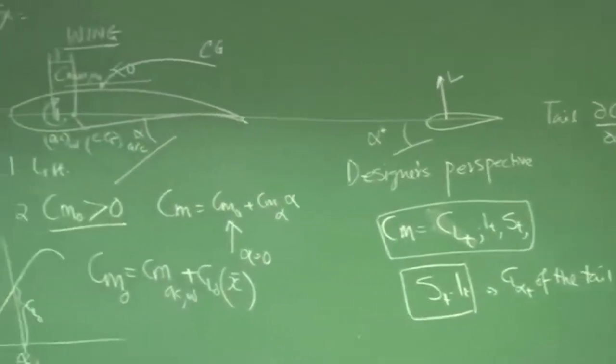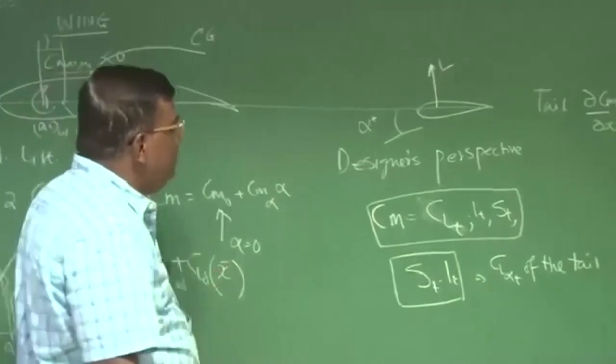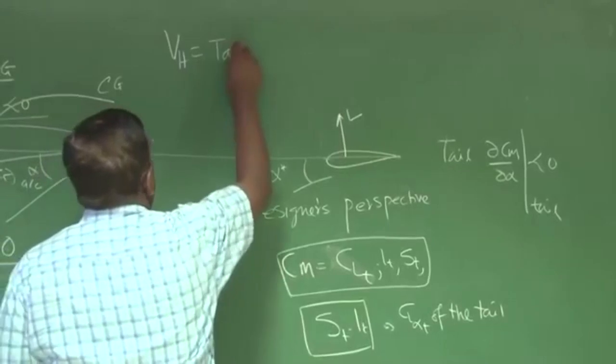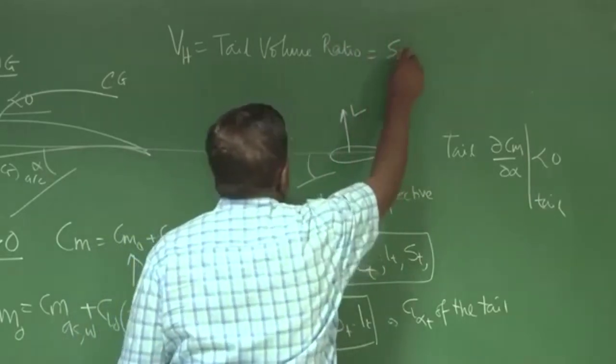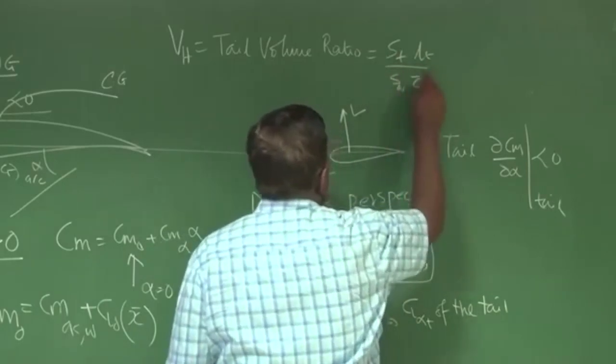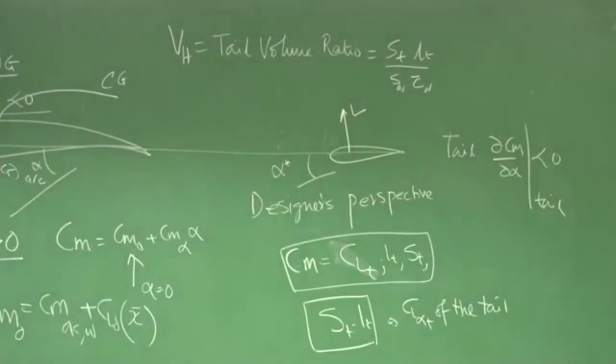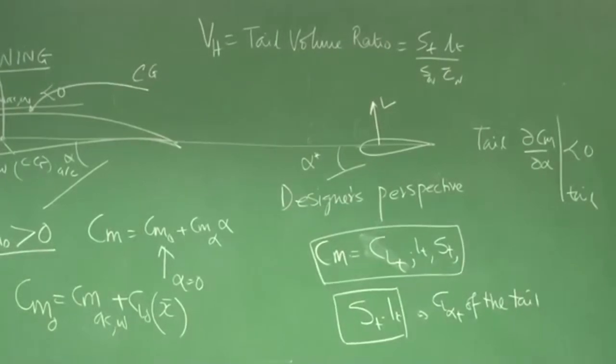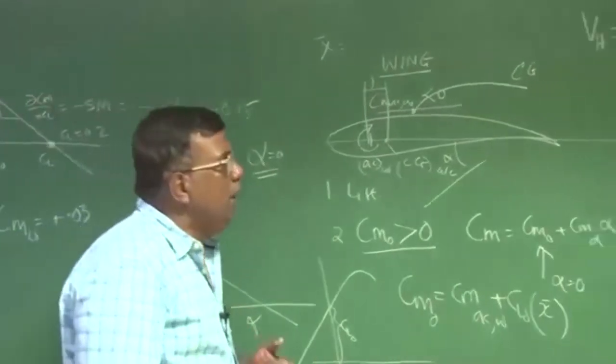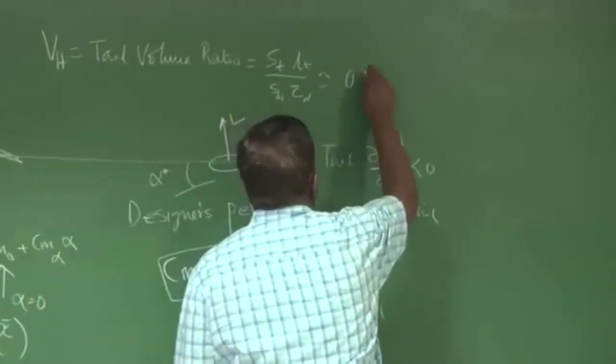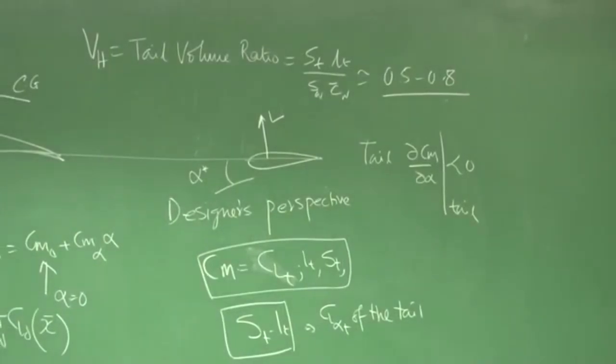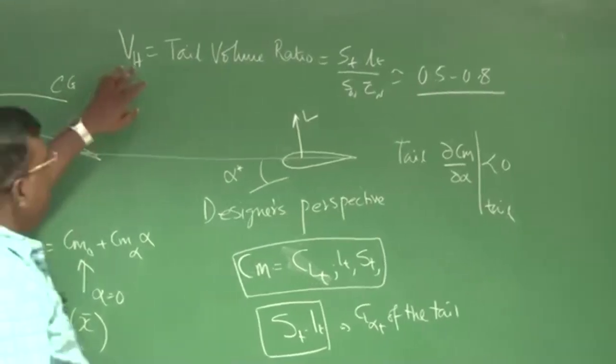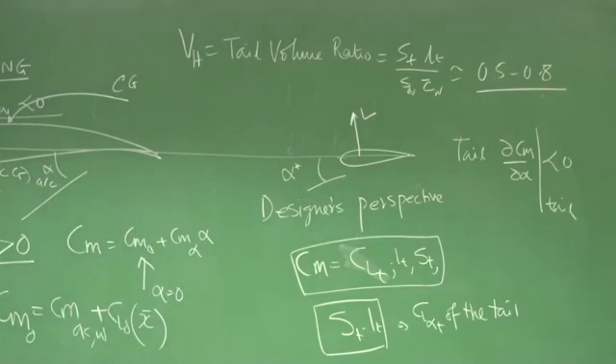And if you recall, once you want to think in terms of non-dimensional term, we define something called VH tail volume ratio, which is ST LT by S wing C bar of the wing. So this tail volume ratio is rigorously used to conceptualize an airplane initial stage from the stability point of view. And typically you will find the initial stage from 0.5 to 0.7 or 0.8, if you take, you are fairly safe. You can do final tuning afterwards. So we will also see how to design a tail from tail volume perspective.